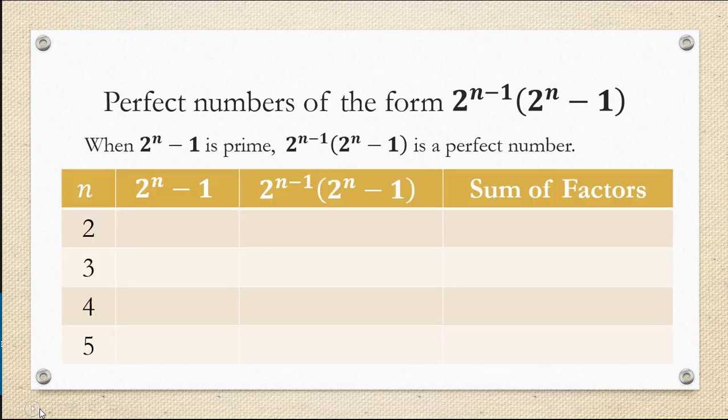Let's take a look at a few examples. So here we have a table and we have the values of n being 2, 3, 4, and 5.